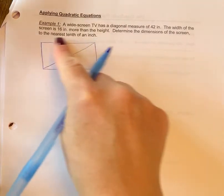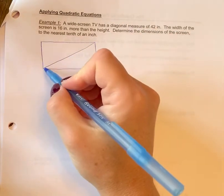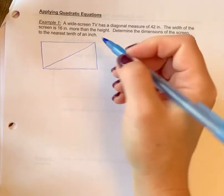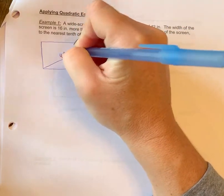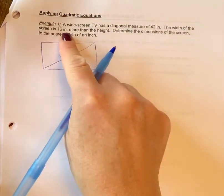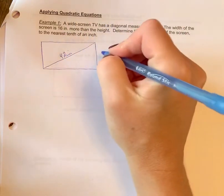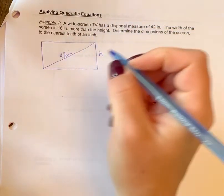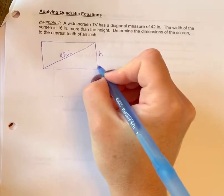Okay, so you've got a rectangular screen here. The diagonal would be this distance right here that I drew, so that's 42 inches. The width of the screen is 16 inches more than the height, so we'll call this the height, and we'll call this height plus 16.